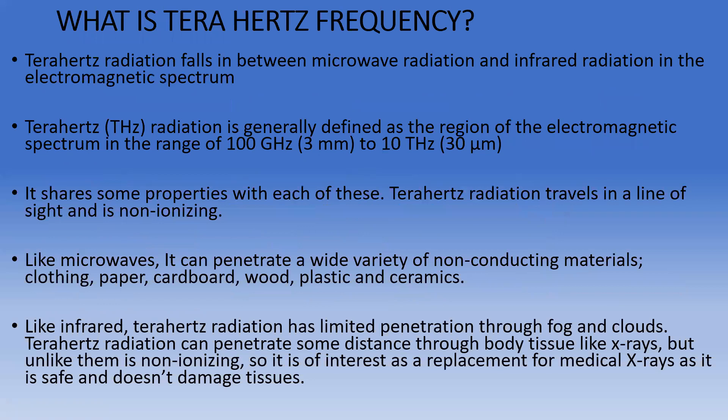So what's the terahertz frequency? Terahertz radiation falls in between the microwave and the infrared radiation in the electromagnetic spectrum. It is generally defined as a region of the electromagnetic spectrum in the range of 10 gigahertz to 10 terahertz. It has been found that human cells actually have a frequency of about 2 to 17 hertz, and that's why this device is very powerful in helping the body heal itself.